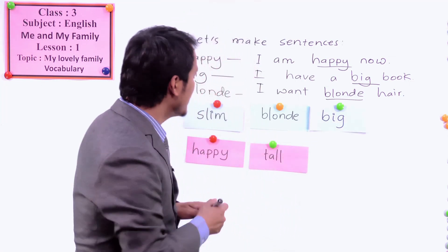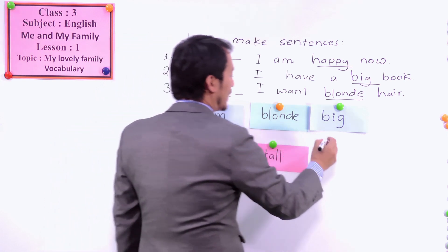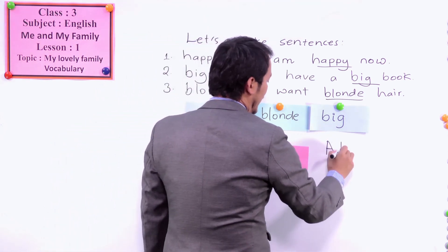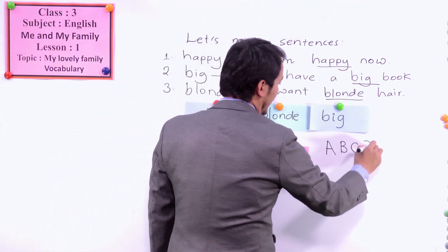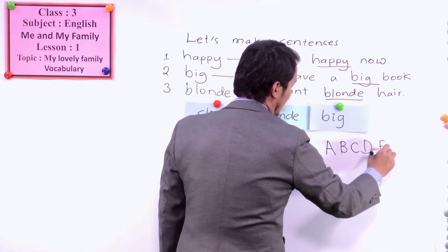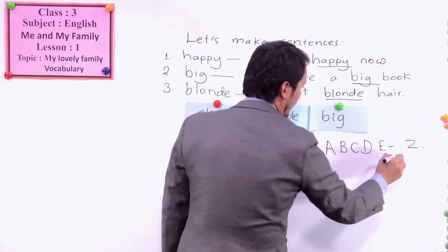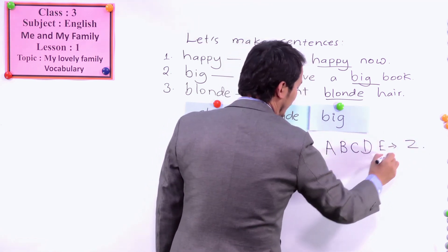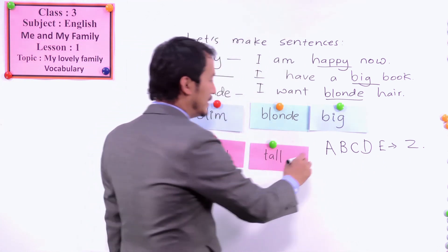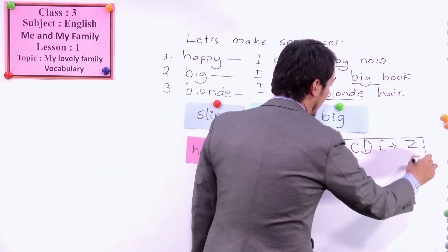Alphabet means we have alphabets like A, B, C, D, E to Z. From A, B, C, D to Z — this is called alphabetical order. B comes after A, C comes after B, and C comes before D. Likewise, some letters have an order according to the alphabet.